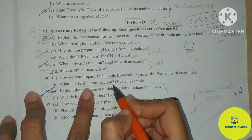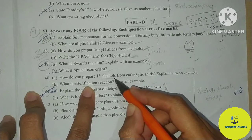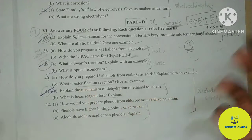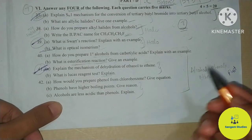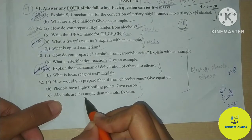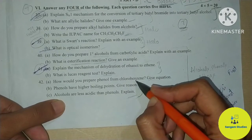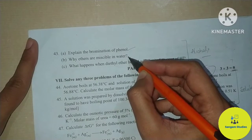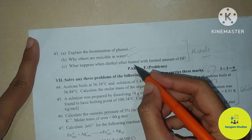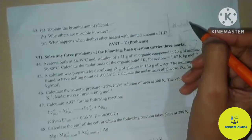What is an esterification reaction? — Yes, esterification reaction is an important reaction. This question can be answered, but the primary alcohol from carboxylic acid part may create some ambiguity. Next question: How do you prepare phenol from chlorobenzene? Phenols have higher boiling points. Alcohols are less acidic than phenols — these are direct questions. Preparing chlorobenzene into phenol might create some confusion.